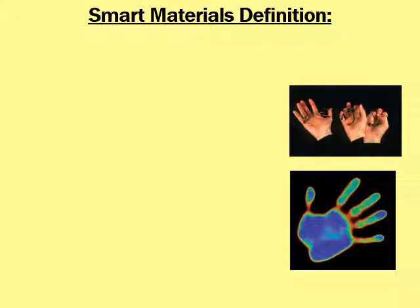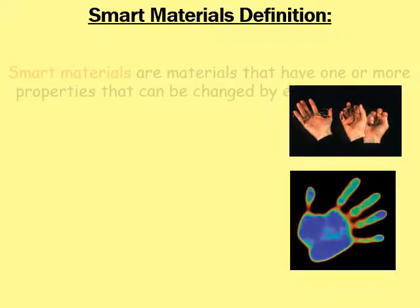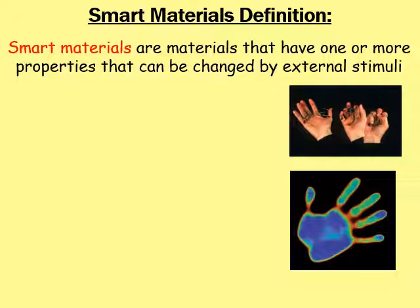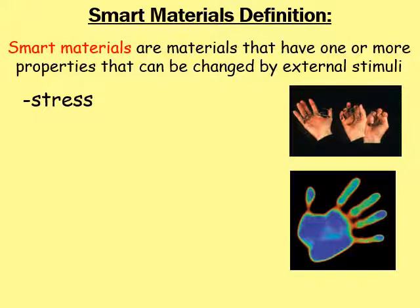The first thing I'd like to do is introduce you to the actual definition of a smart material. Smart materials are materials that have one or more properties that can be changed by external stimuli. Basically, when you apply something from the outside of the material to it, the actual physical properties of the material change. For example, you can apply stress to the material and something will happen to the material's properties.